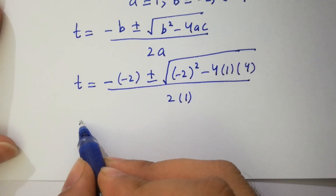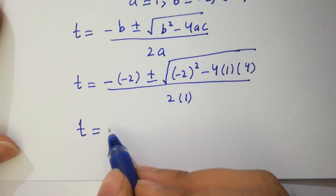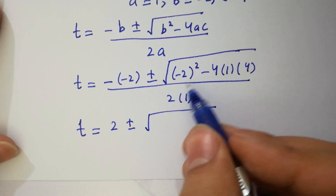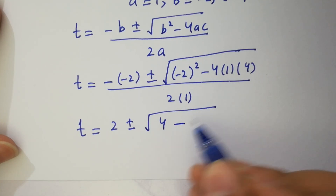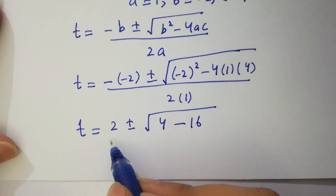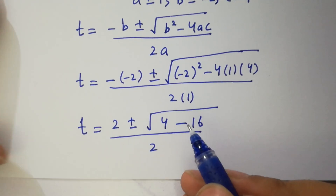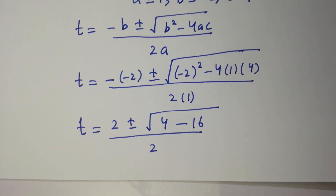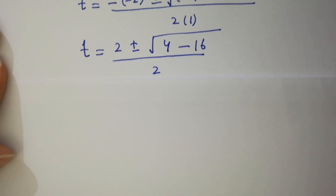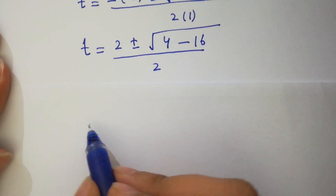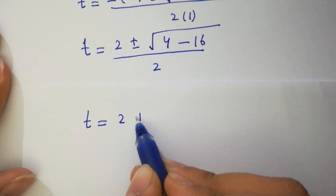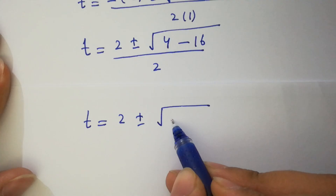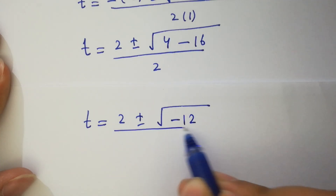Substituting: t = (2 ± √((−2)² − 4·1·4)) / 2 = (2 ± √(4 − 16)) / 2 = (2 ± √(−12)) / 2.